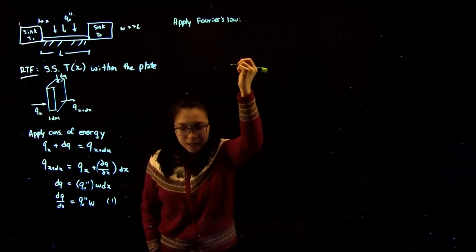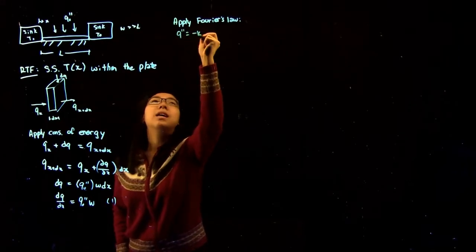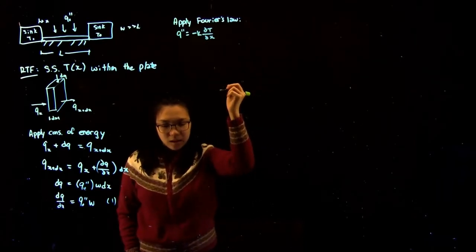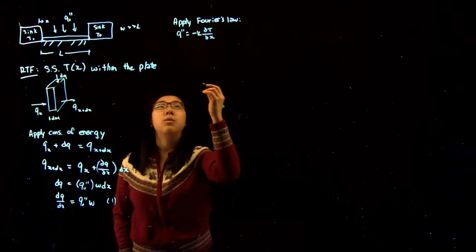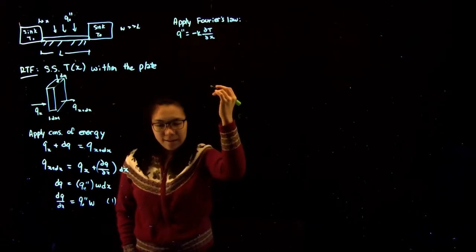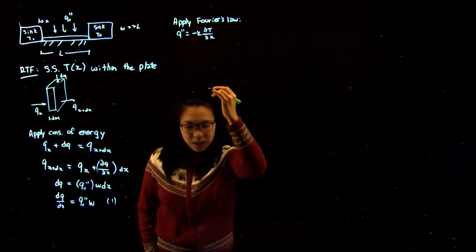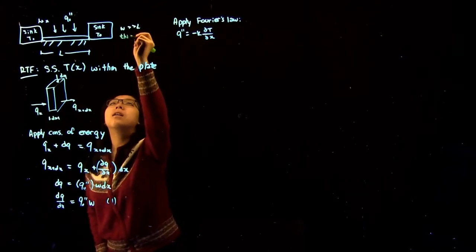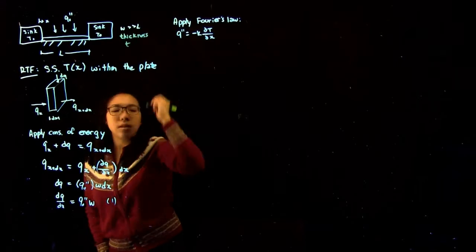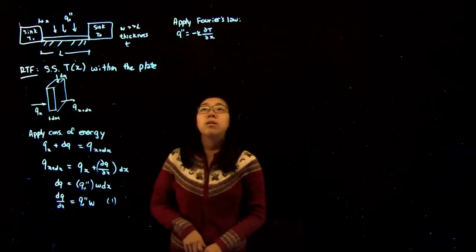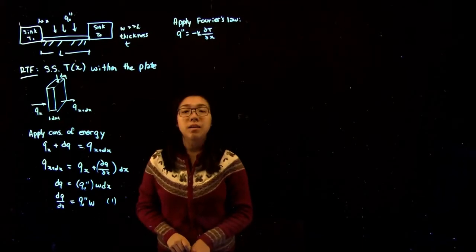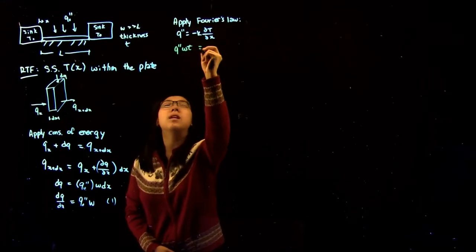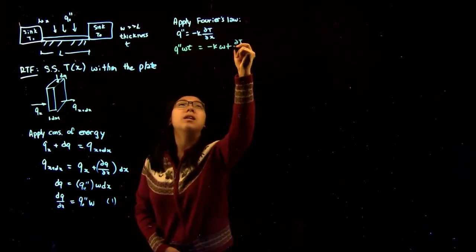Applying Fourier's law gives us that the flux is equal to minus K times dT/dx. We want to solve this as an energy balance, so we multiply both sides by the area. I'm going to call the thickness value t. So multiplying both sides by the cross-sectional area gives us flux times Wt is equal to minus K Wt times dT/dx.